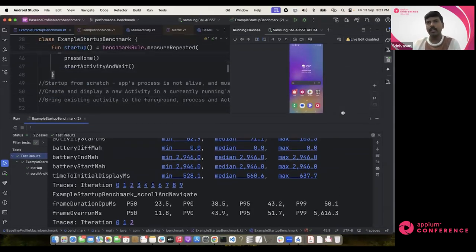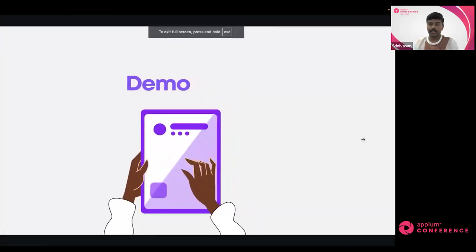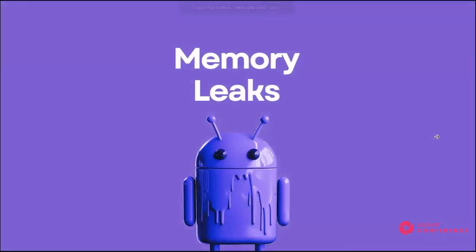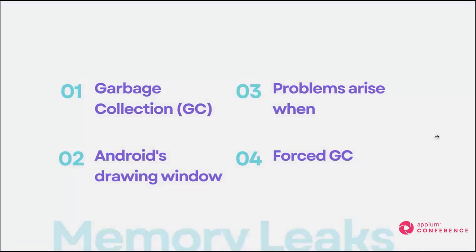These are the four core metrics required to start with for mobile performance. Let's also quickly talk about memory consumption and how we can identify memory leaks. Memory leaks occur when allocated memory is not freed after it's no longer needed, which accumulates unused memory. Let's understand garbage collection.